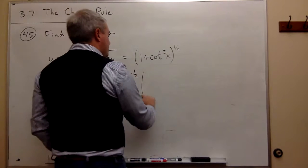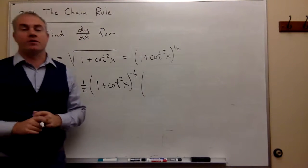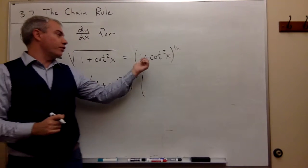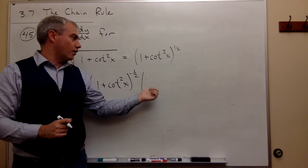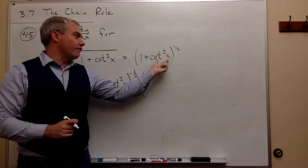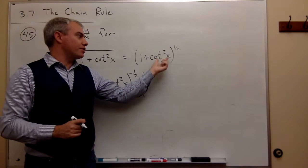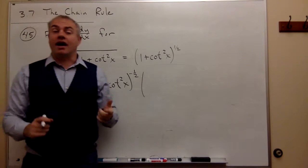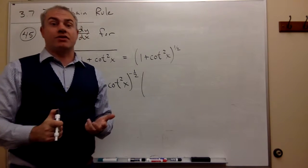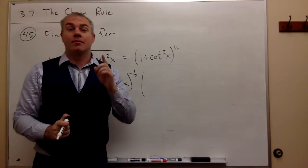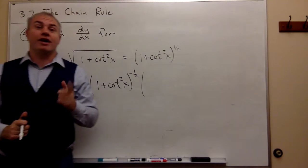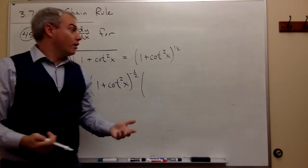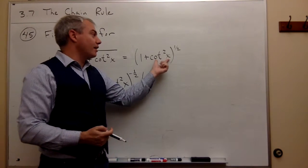So what's the derivative of 1 plus cotangent squared of x? The derivative of 1 is 0. The derivative of cotangent squared of x — I don't immediately know that, but I can figure it out using the chain rule. So we use the chain rule again.